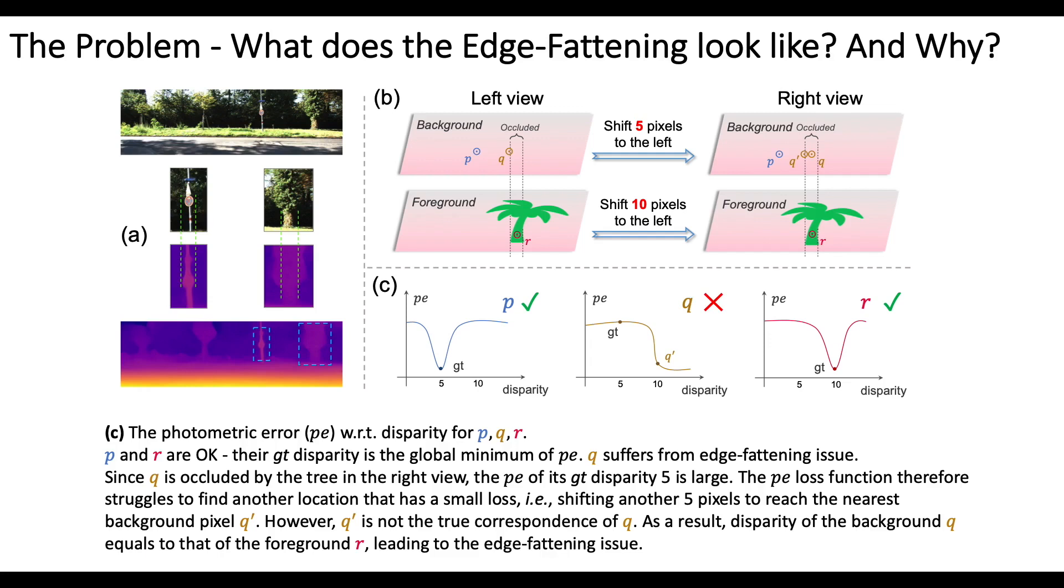P and Q are okay. Their GT disparity is the global minimum of PE. Q suffers from the edge fattening issue. Since Q is occluded by the tree in the right view, the PE of its GT disparity 5 is large.